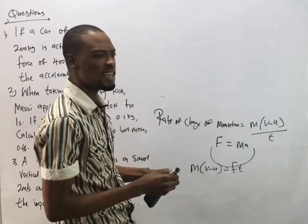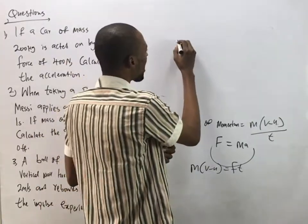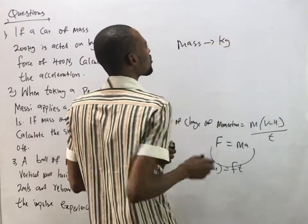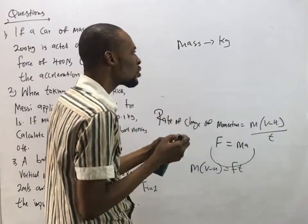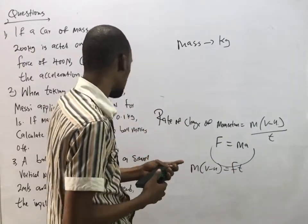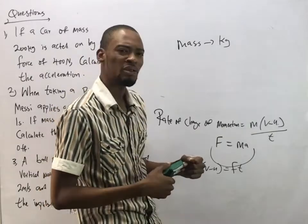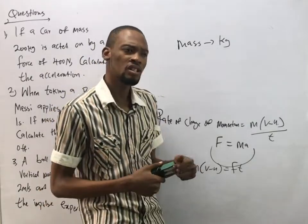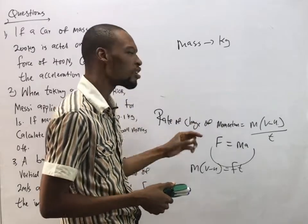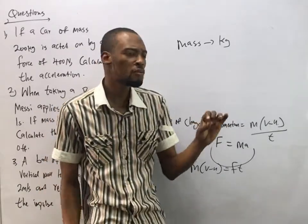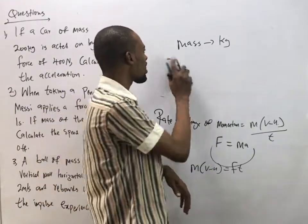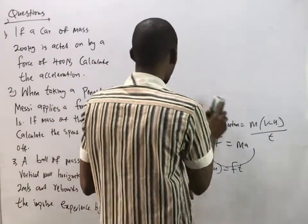Note that the unit of momentum is newtons or kilogram meters per second. This means any time you are given mass, always convert it to kilograms — divide grams by 1000. If distance is given in centimeters or millimeters to calculate velocity, convert to meters.